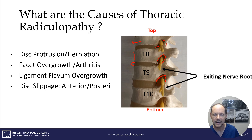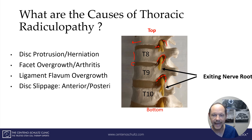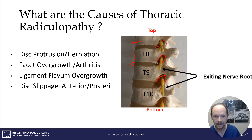So again: a disc protrusion in the front, overgrowth of the thoracic facet in the back, thickening of the ligamentum flavum, or slippage of the discs.